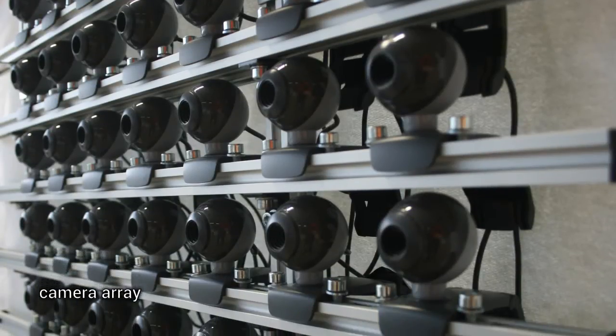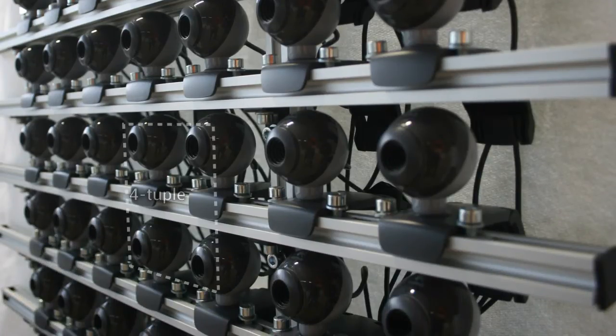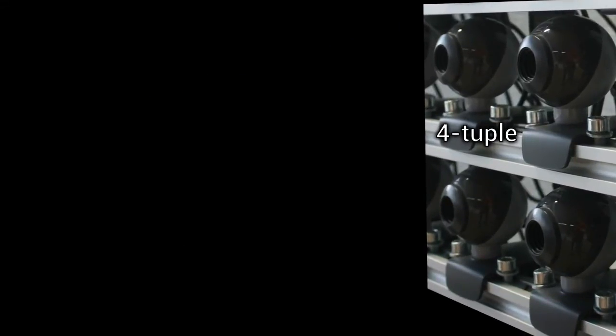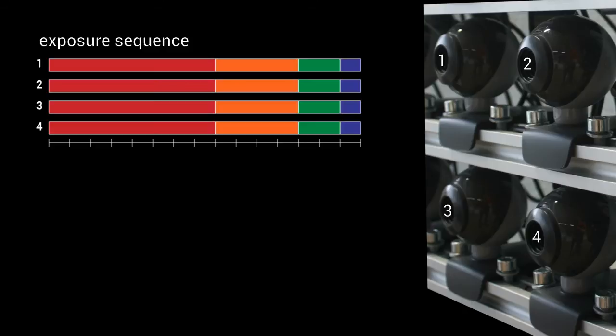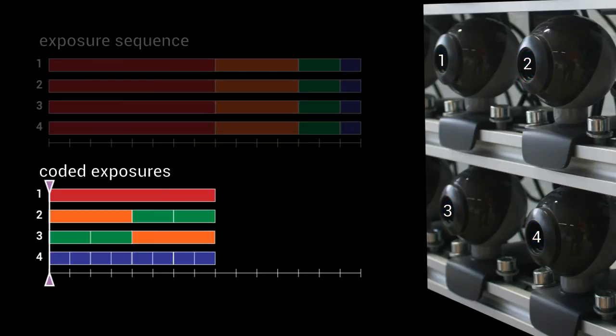We encode four exposure times in each repeating camera quadruple of a camera array. A regular exposure sequence leads to long recording intervals and consequently to motion blur if the camera is moved. Our Spaceshoot Temple exposure coding leads to shorter recording intervals.